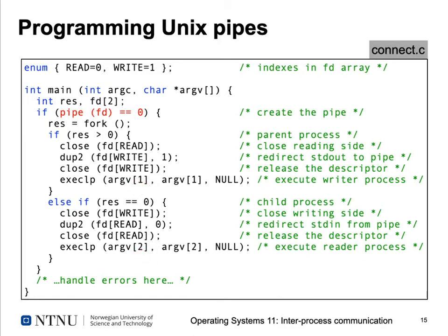In the child process, the write end is closed and dup2() duplicates the read file descriptor onto standard input (fd 0). The child then executes a reader process. As a result, anything the writer writes to standard output automatically arrives at the reader's standard input — the output of one process is connected to the input of the other.